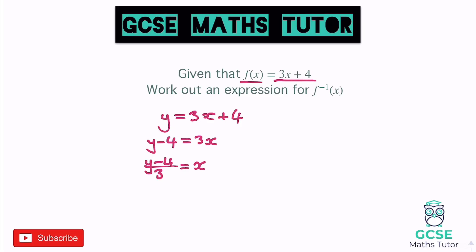Now obviously the y I only put in place there just to help me rearrange it. So it's just easier to replace f of x with a letter, and what we're going to do now is swap the x and y over, and that leaves us with x minus 4 over 3, which equals the inverse function of x. Think back to the logical idea — to reverse multiplying by 3 and adding 4, you take away 4 and divide by 3, and that's exactly what the inverse function shows. So all we're going to do is write y equals instead of f of x, make x the subject, and then swap x and y — three little steps with some rearranging.